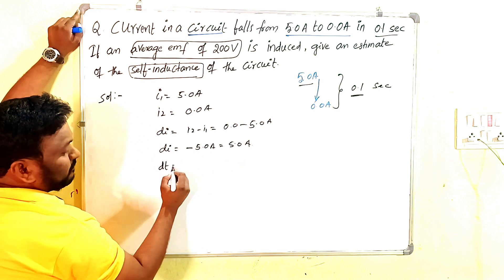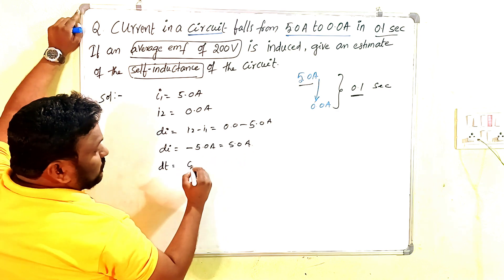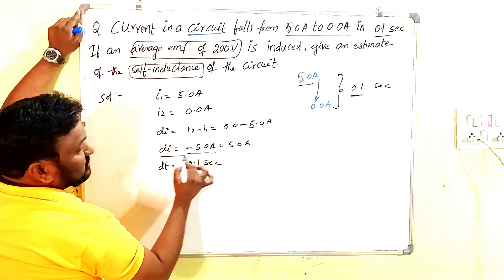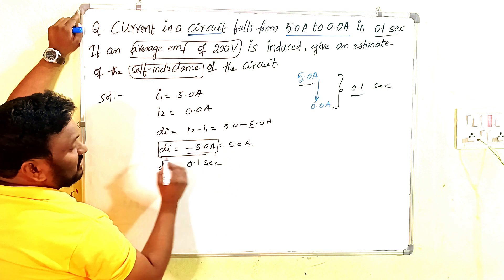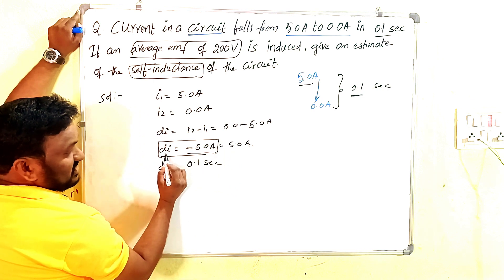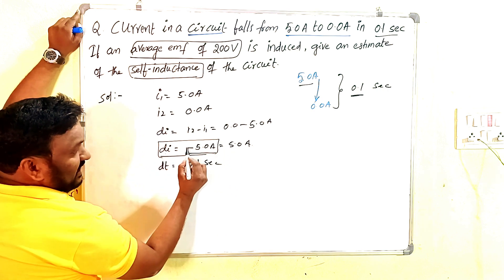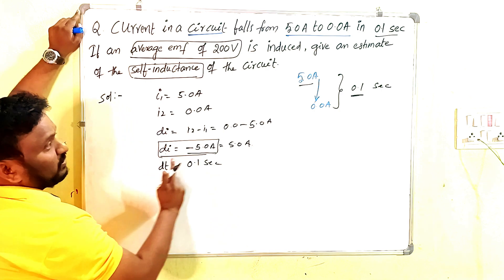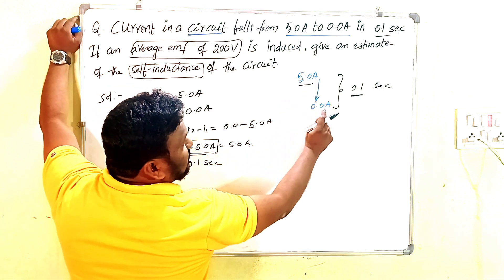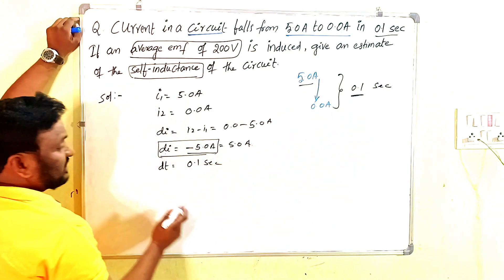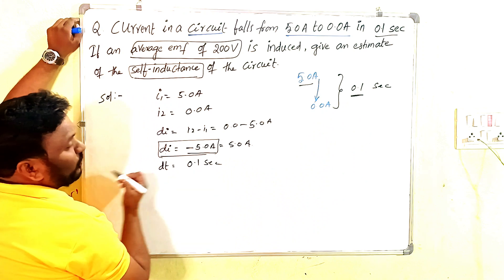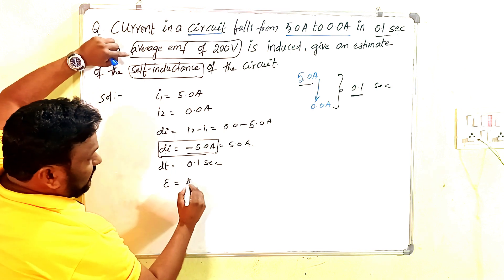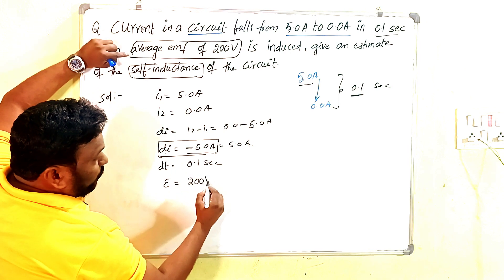The time taken is 0.1 seconds. The -5.0 amperes is the change in current, and the negative sign indicates a decrease in current. The EMF is 200 volts.